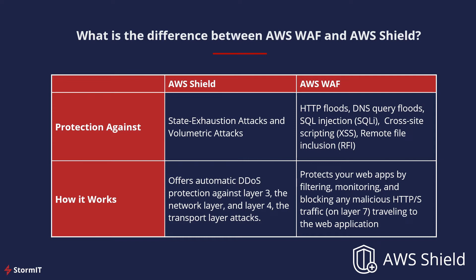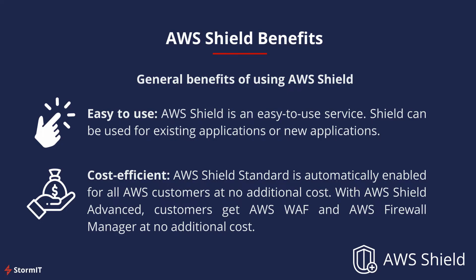Let's look at the difference between Shield and AWS WAF. The main difference is that WAF provides protection on the application layer, while AWS Shield protects the infrastructure layers of the OSI model. Shield protects against state exhaustion attacks and volumetric attacks. AWS WAF protects against HTTP floods, SQL injection, cross-site scripting, and more. AWS WAF is included in the AWS Shield Advanced subscription at no additional cost.